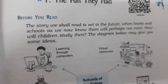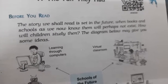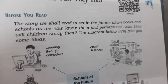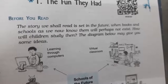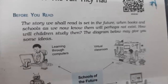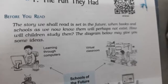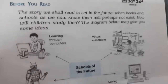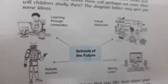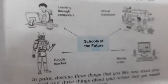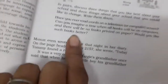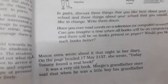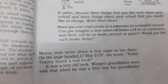Future ki school ke baren bataaya gaya hai, jahaan per when books and schools as we now know them will perhaps not exist. Jahaan per hum books or school jynko jis prakar se jaante hain, shayad aisa kuch bhi maujud nahi rahega. How will children study then? Bachche tab kaisi study karenge? Through computers, through robotic teacher, through virtual classroom, or moving e-text ke dwara. The student, let's start. Hum is chapter ko ab start karenge. I hope aap sari bachcho ne apne apne book ko open kar li hogi.